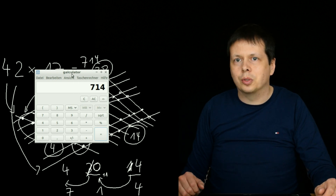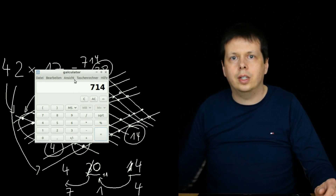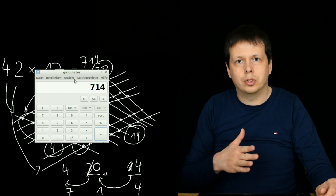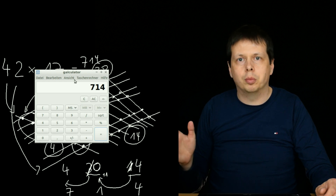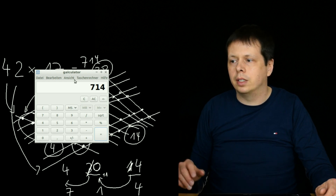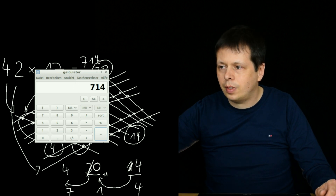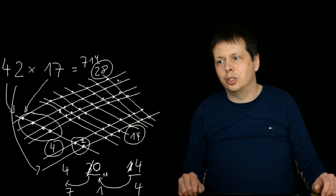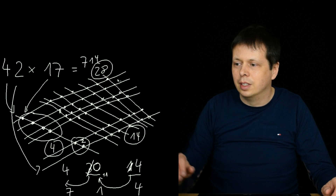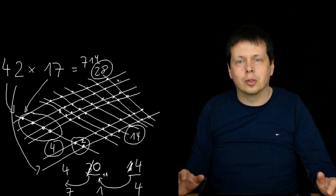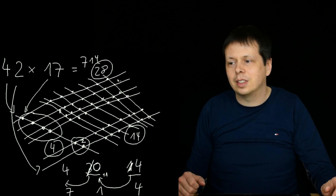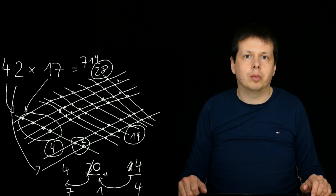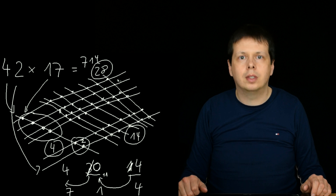It's also possible to use this method with easier numbers — like one-digit numbers — or even if you multiply a three-digit number by a two-digit number. So it's not the only possibility to multiply two-digit numbers; you can do this with lines or sticks. Thank you very much for watching. I wish you a nice time. Bye bye.